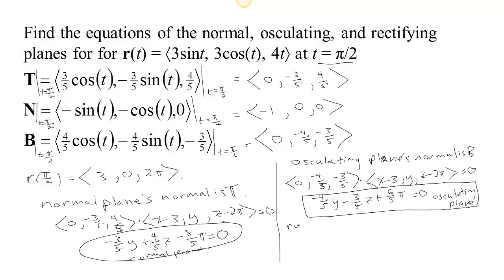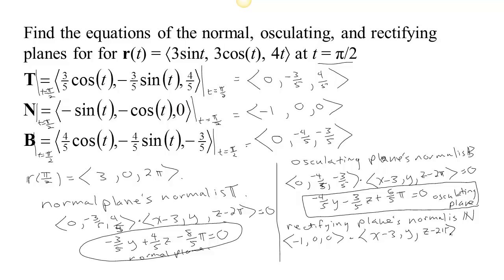Finally, the rectifying plane. The rectifying plane contains T and B, so its normal is N, which is negative one, zero, zero. We dot that with the vector from our point on the curve — three, zero, two pi — to any other point on that plane, and that dot product must be zero. We get negative x plus three equals zero as the equation of our rectifying plane.